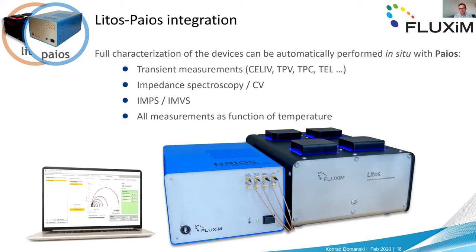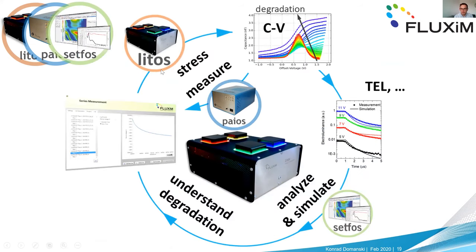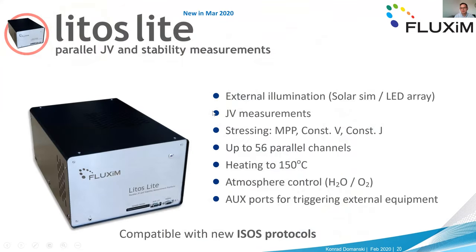LITOS can also connect to PIOS — a powerful platform to measure all sorts of transient, AC and DC characteristics of optoelectronic devices. For example, you can do four hours of MPP tracking for all 32 devices then measure impedance spectroscopy, CELIV, TPV, or TPC for each. The approach is to combine LITOS stress, PIOS measurements, and drift-diffusion simulations in Setfos to understand degradation in terms of unique parameters like charge mobilities or electrical barriers at interfaces — this is called the LITOS cycle.